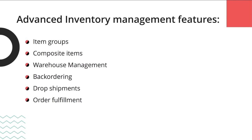First, we have item groups, which helps you manage your items in a more sophisticated fashion. For example, if you're in the textile industry dealing with garments, a T-shirt might have different variants based on sizes like small, large, XL, and based on patterns like with sleeve or without sleeve. So it's basically one product having different variants. This can be managed as one item group in Zoho Inventory.